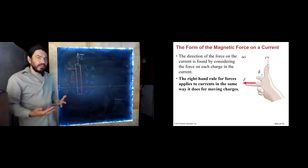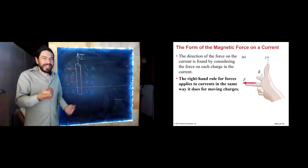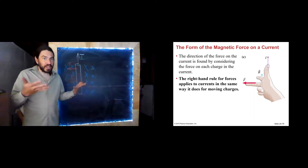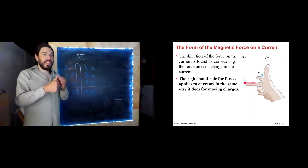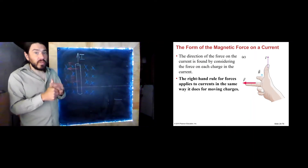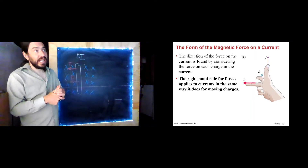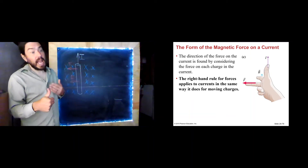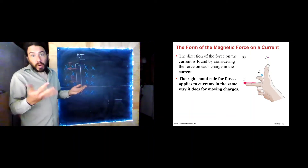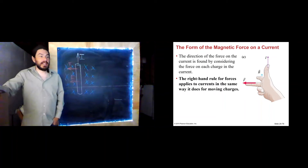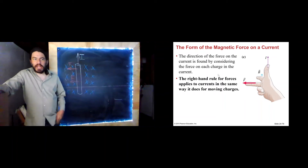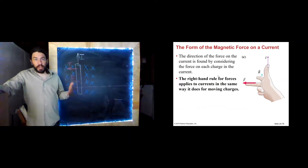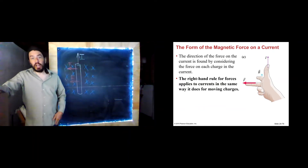We really already learned this, because what is a current? Just a moving positive charge. So if we just think of the thumb as representing those moving positive charges, then it can represent either a solitary positive charge or a current — either one works just fine. In my brain, it's just the same as the right-hand rule we already learned. Why? Because a current is a moving positive charge.